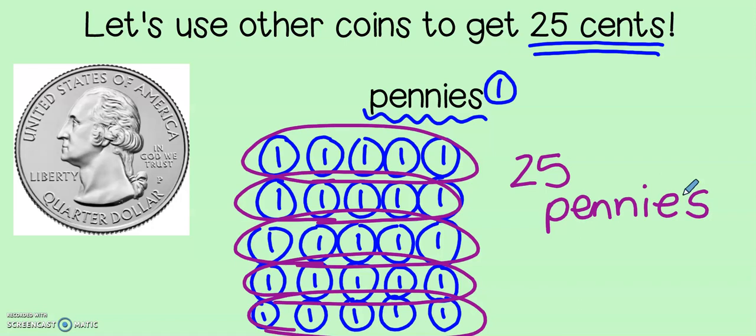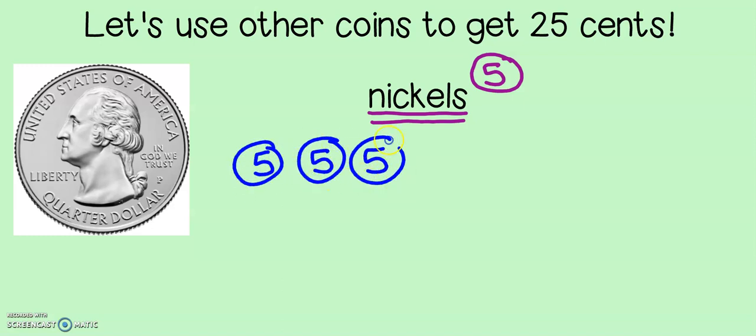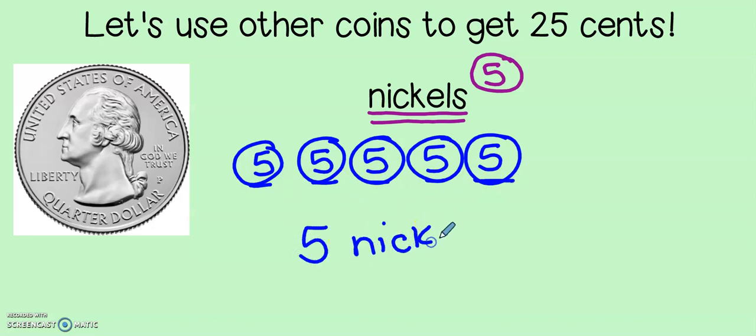What if I want to show 25 cents, but this time I want to use nickels? Nickels, as you know, are worth 5 cents. Let's count by fives together and stop when we get to 25. 5, 10, 15, 20, 25. Wow, that's a lot less coins. Let's see. We have 1, 2, 3, 4, 5 nickels. That is a much better amount than carrying around 25 pennies. 5 nickels would be a lot less to carry. That sounds better to me. Very nice. So in this problem, we only used nickels.